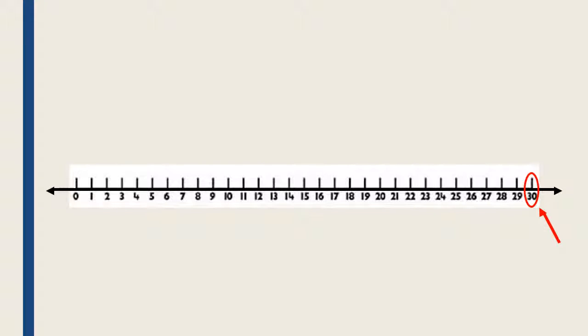You counted to 30 on the number line. This is 30 on the number line. This is the number 30.